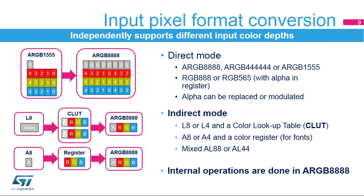For each foreground and background layer, the format can be programmed independently. Direct mode fetches the RGB or ARGB content directly from the memory. Indirect mode uses an intermediate color lookup table to determine the color to be used during the copy or blending operation. All input color modes are transformed internally into ARGB 8888 format to perform the blending operation.